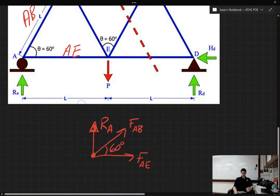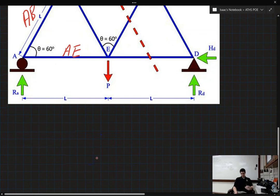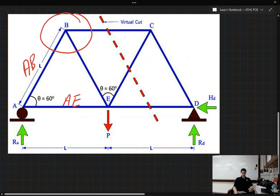So, for this joint B, let's draw our dot. And I'm going to go ahead and draw this horizontal force first. That's the force because of member BC.